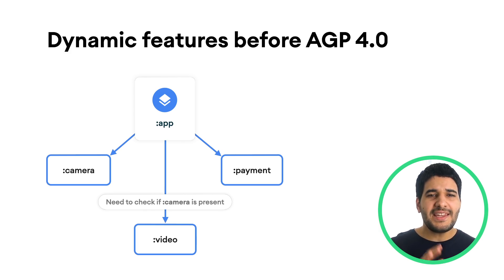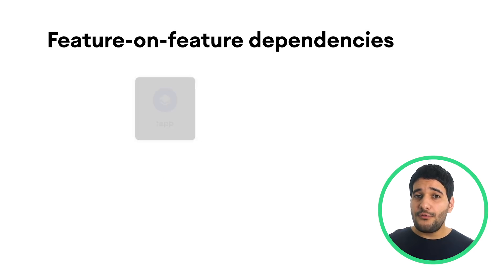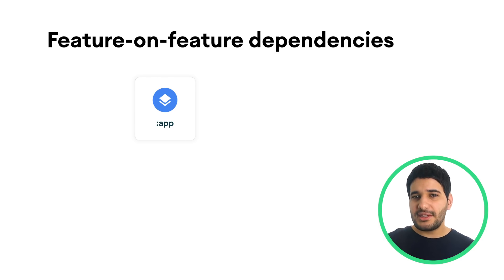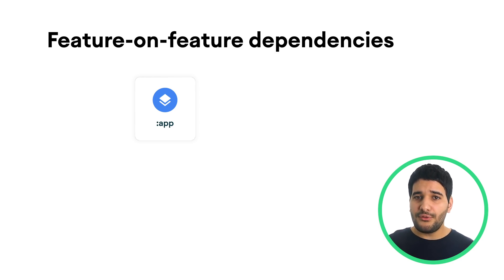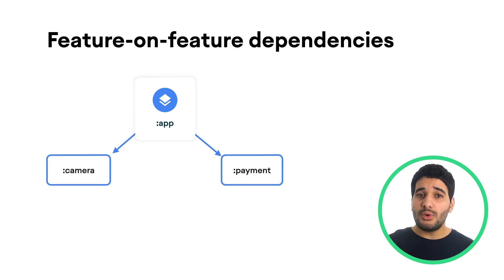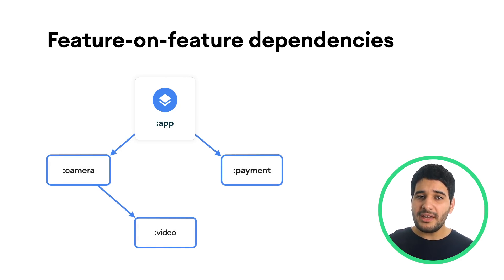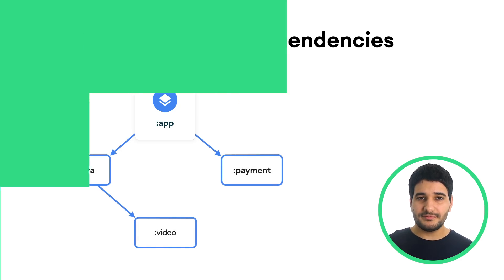For example, imagine a video module that depends on a camera module, which depends on the base module. When downloading the video dynamic feature, the application will also download the camera module automatically for you.